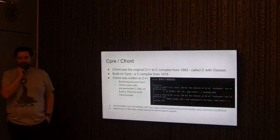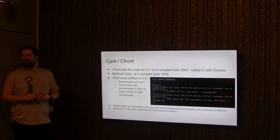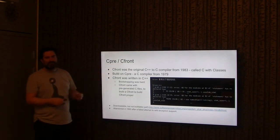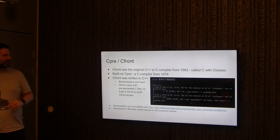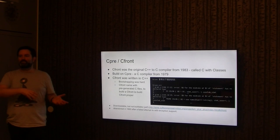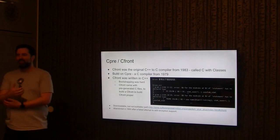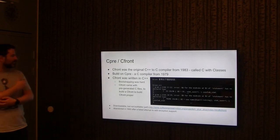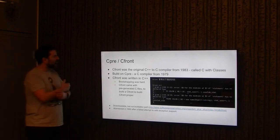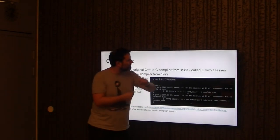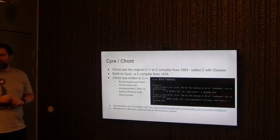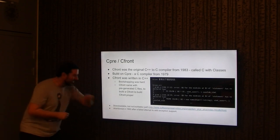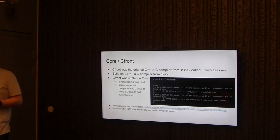Coming back to C++: there was a C compiler called CPre that was derived into CFront, which was the original C++ transpiler. It compiled from C++ to C, and then you used your local C compiler to compile it into something you can run. CFront comes from 1983 — the first release was called 'C with classes.' The last release was version E from around 1993, when they tried to add exception support and couldn't do it. I was an hour early, so I thought let's try to build this — that would be fun.